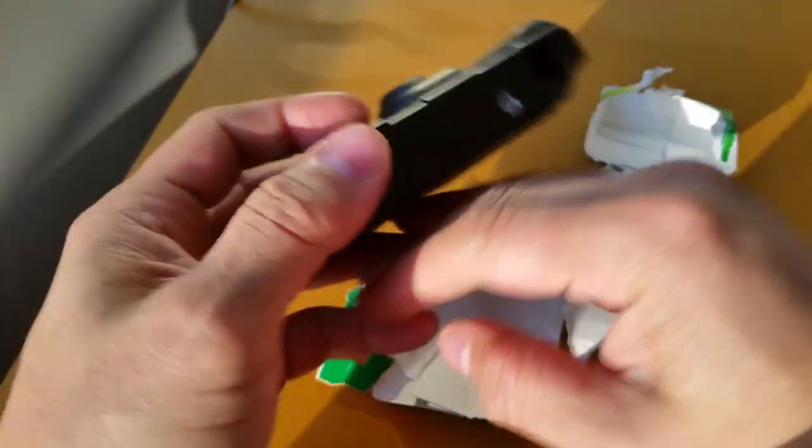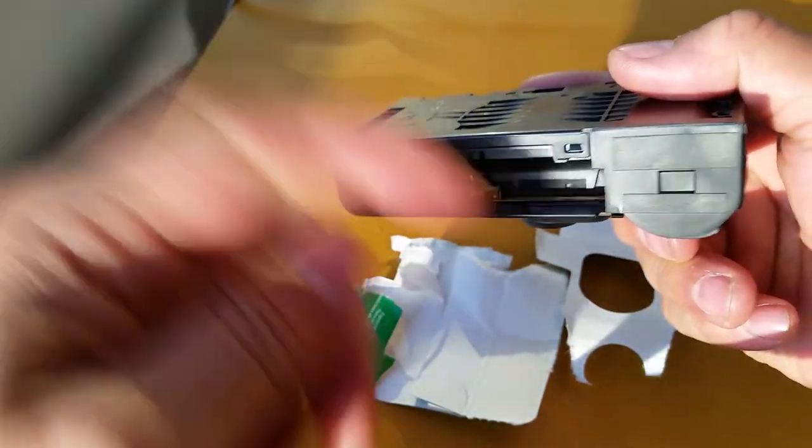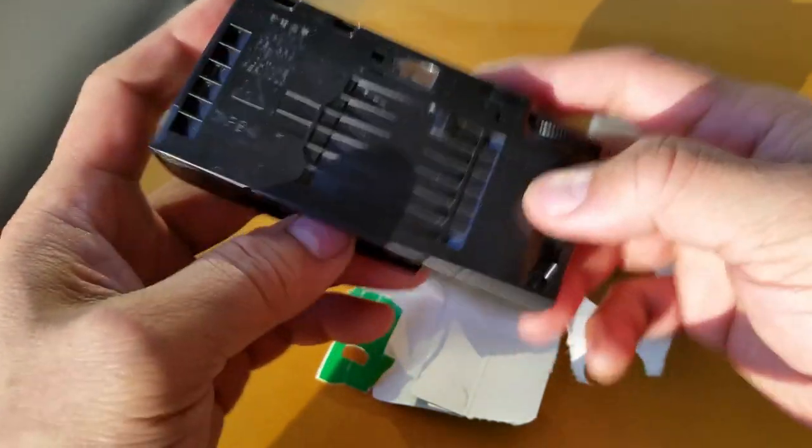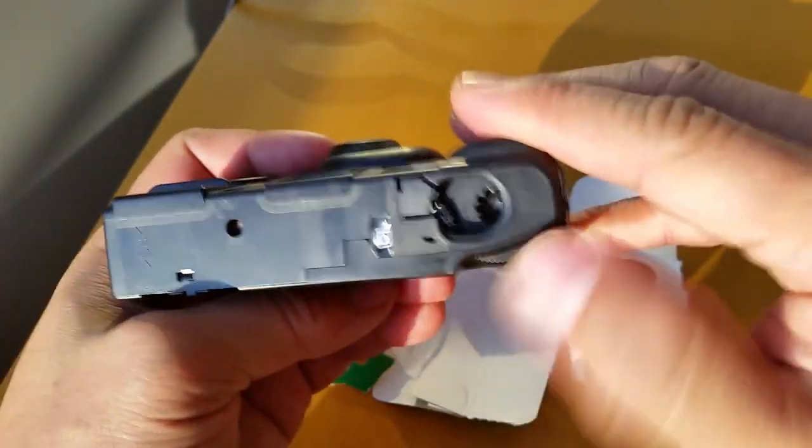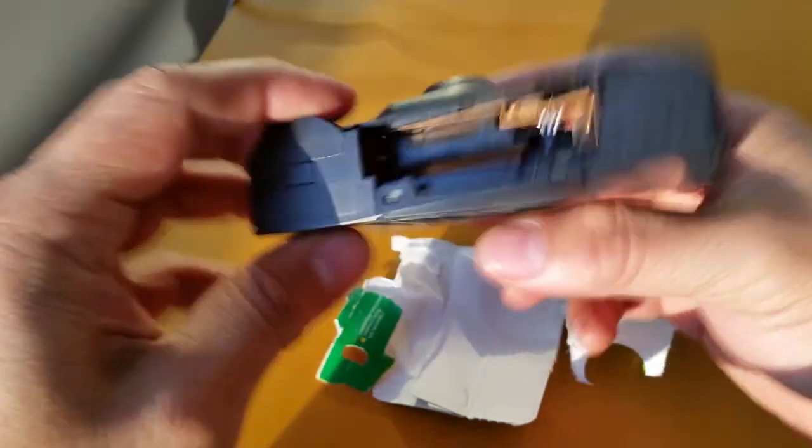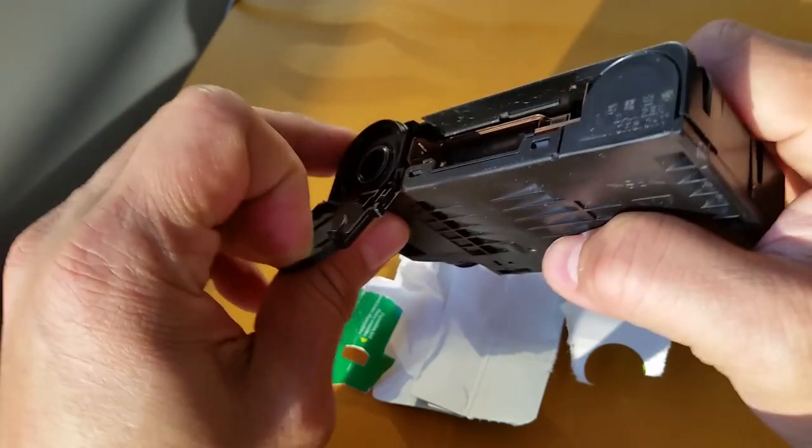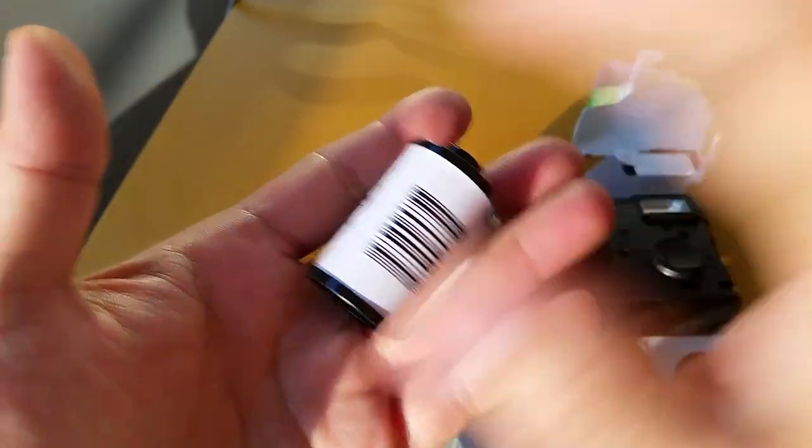And then next, the easiest part. Usually there's a battery right here, but I took mine out already. But make sure your film's all the way done, and that it's doing this, okay? So what you wanna do is basically just look for this part right here, the bigger part, and you just pull. And guess what? Ta-da!